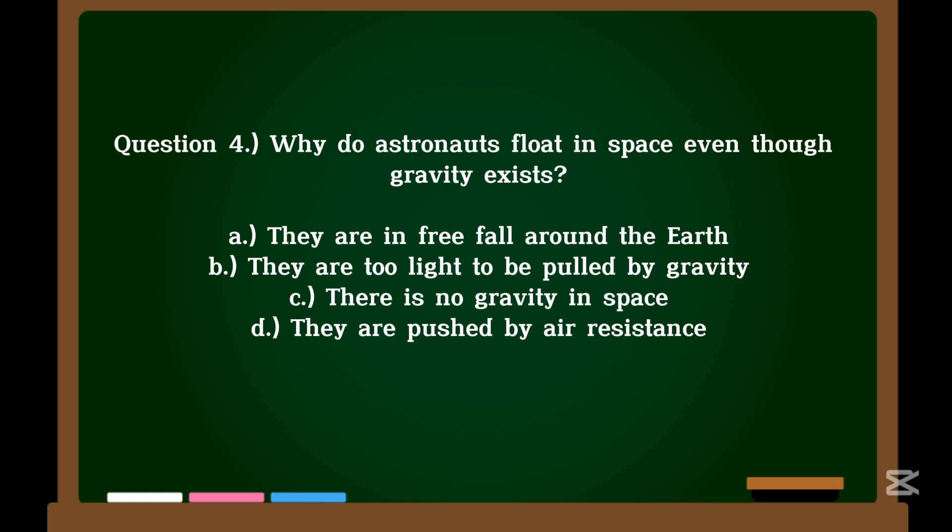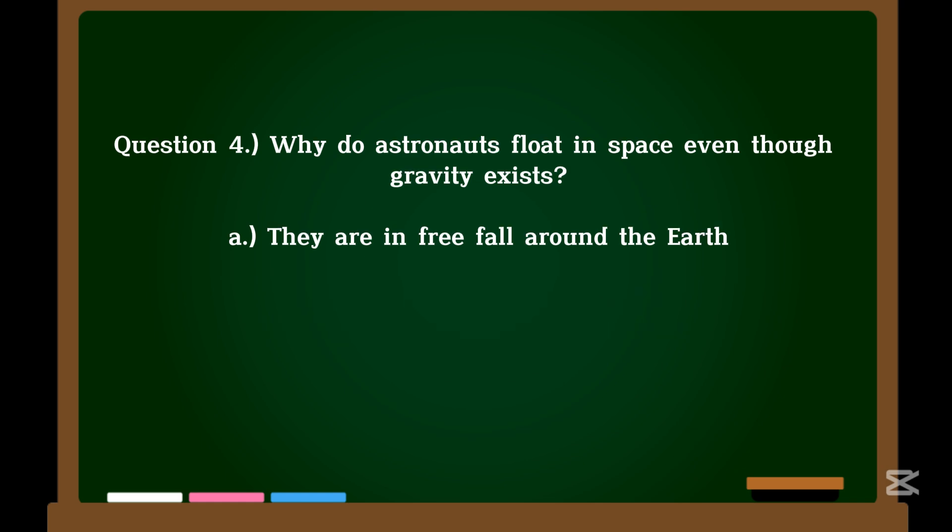Question 4. Why do astronauts float in space even though gravity exists? A. They are in free fall around the earth. B. They are too light to be pulled by gravity. C. There is no gravity in space. D. They are pushed by air resistance. Correct answer: A. They are in free fall around the earth.